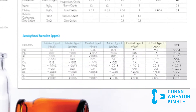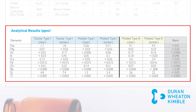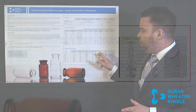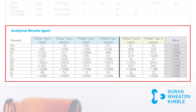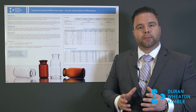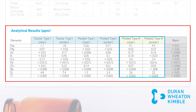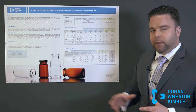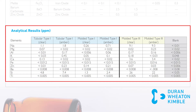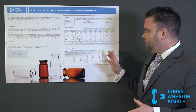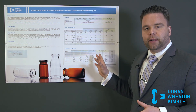I have the elements we tested for on the left-hand side of the screen. You can see we have sodium, magnesium, aluminum, potassium, calcium, iron, zinc, barium, silicon, and titanium. What we did is compare results through two different types of glass: type 1 glass and type 3 glass. Type 1 glass is known as borosilicate glass. This has your highest hydrolytic resistance, meaning it's less likely to interact with the drug product. Therefore, type 1 glass can be utilized for parenteral applications. Type 3 glass, which is known as soda lime glass, has your lowest hydrolytic resistance and is more likely to interact with the end drug product. The three elements I want to point out are sodium, calcium, and silicon. You can see there are much higher amounts in type 3 glass than type 1 glass. Again, that's due to the fact that you're going to have more interaction with a drug product with type 3 glass than type 1 glass.